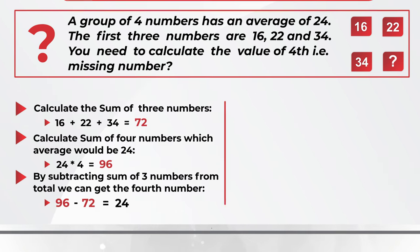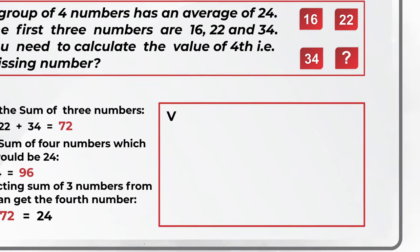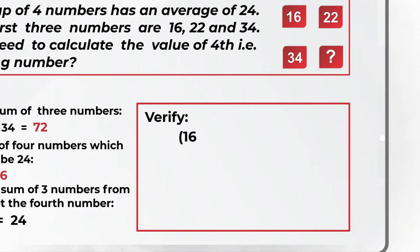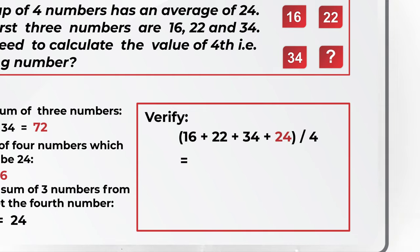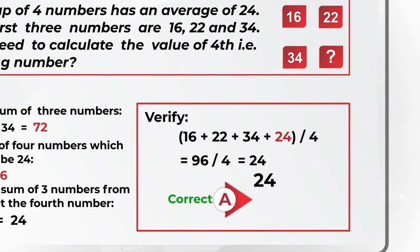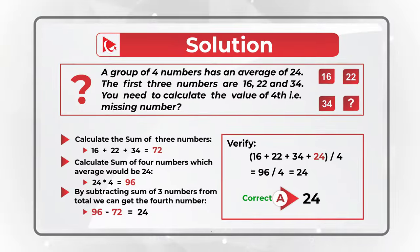Let's verify this: 16 plus 22 plus 34 plus the missing number 24, divided by 4, equals 96 divided by 4, equals 24. Hope we've nailed this question and now know how to answer similar problems on the test.